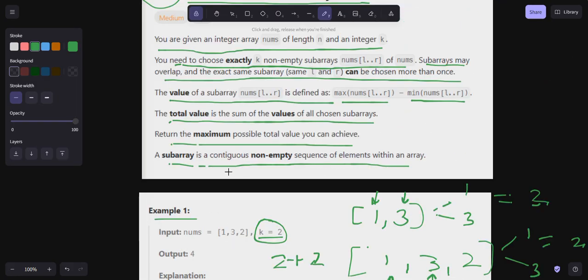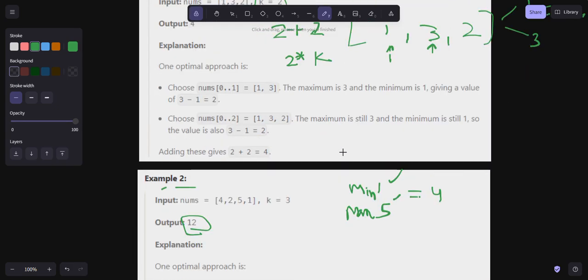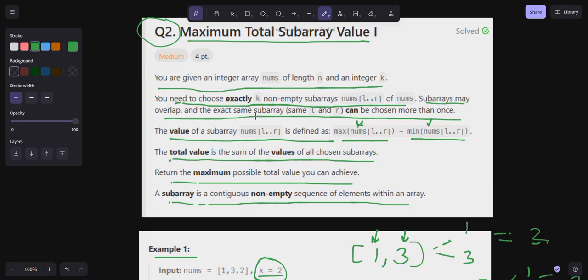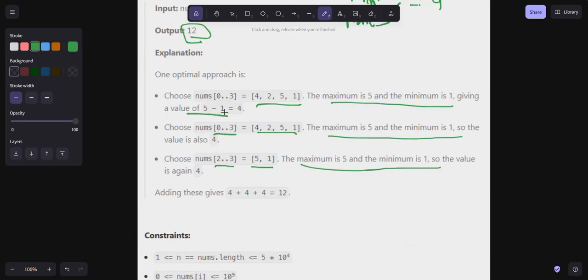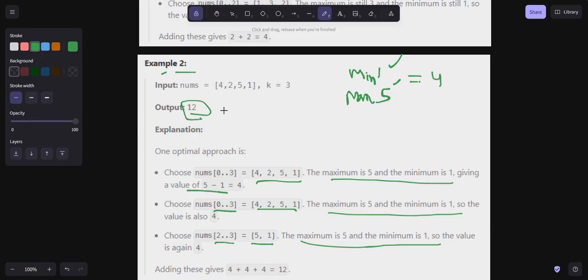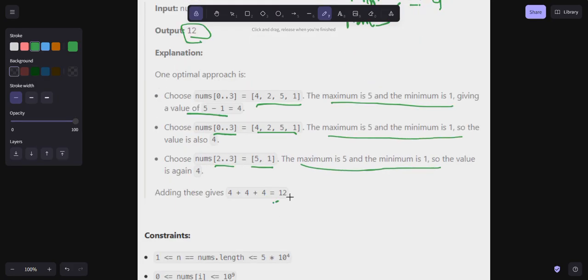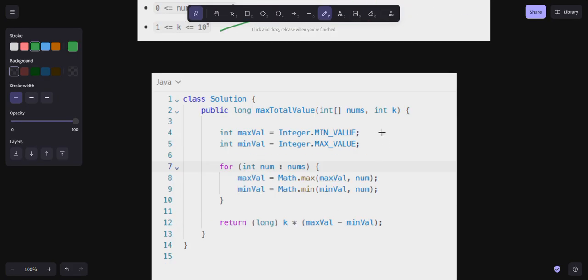Because we have to return the maximum possible value, and maximum possibility I'm only going to get when this is max and this is min. That is why I'm creating subarrays like this. We can choose the exact same subarray more than once. This is what we are doing here, [0:3], [0:3]. So output is 12. These are the constraints and this is the solution.